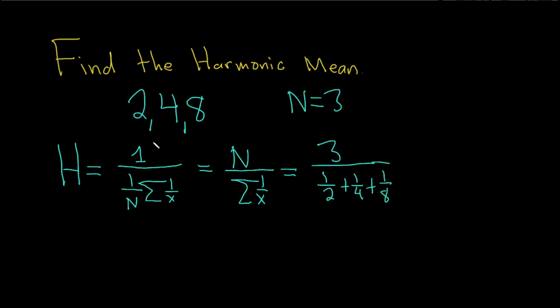Right? The reciprocal of 2 is 1 over 2. The reciprocal of 4 is 1 over 4. The reciprocal of 8 is 1 over 8. And if you work this out, this is 3 over, let's see,